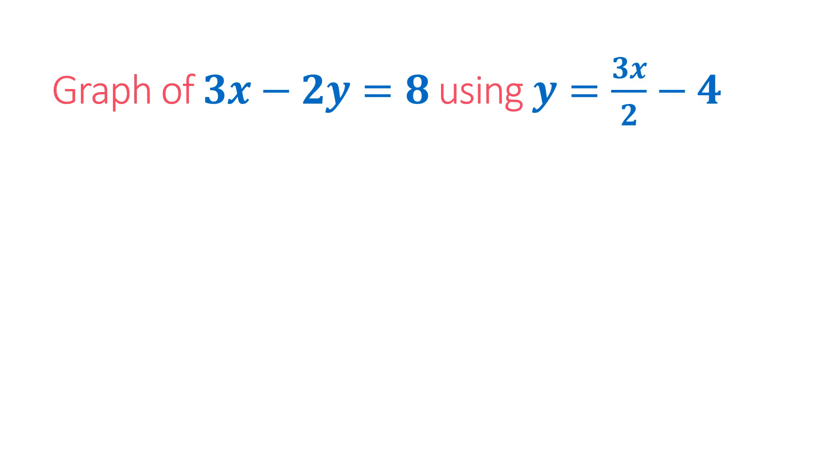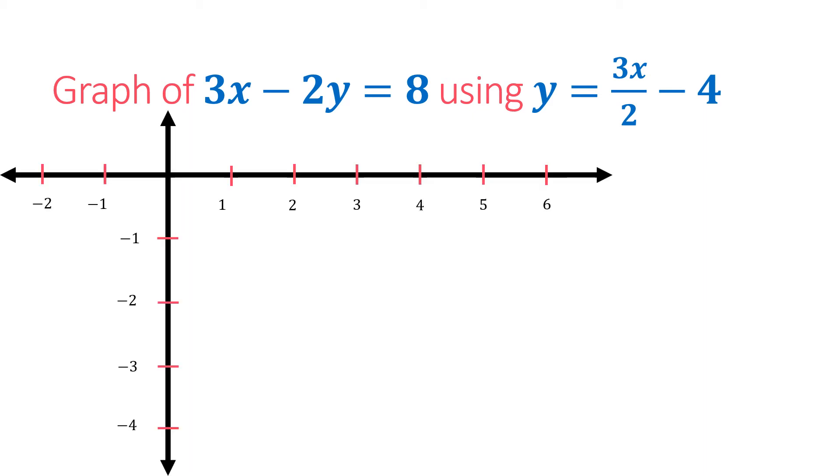Let's graph 3x minus 2y equals 8 using y equals 3x over 2 minus 4. We have a coordinate plane. Our y-intercept is negative 4, so we have a point located here.